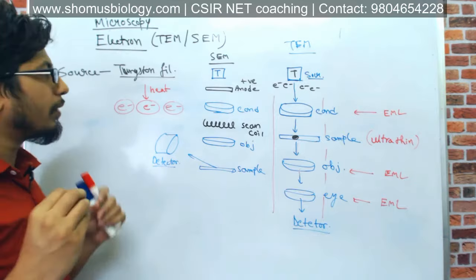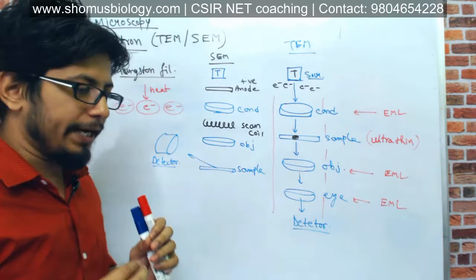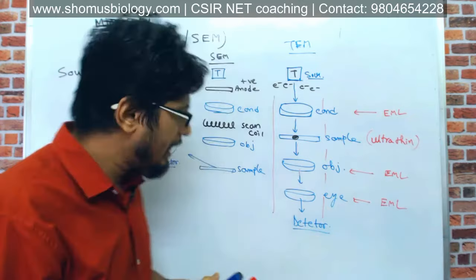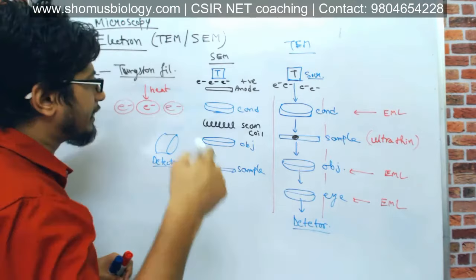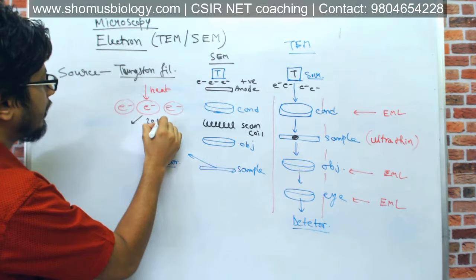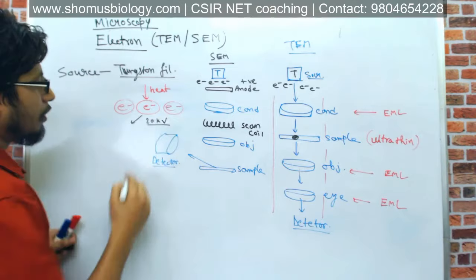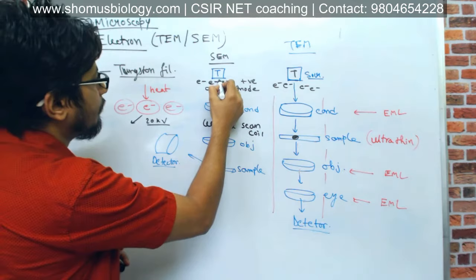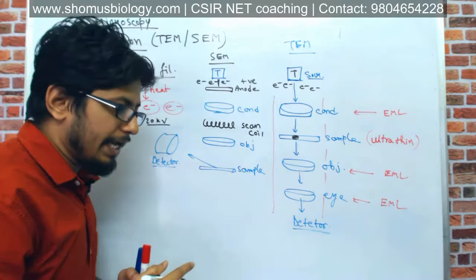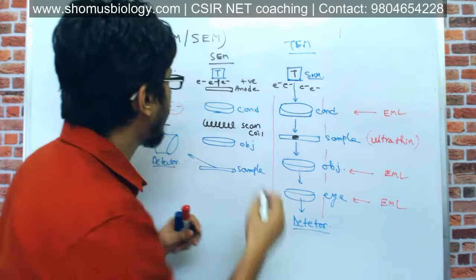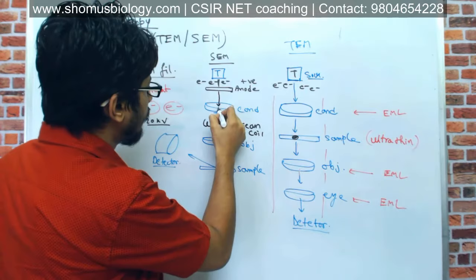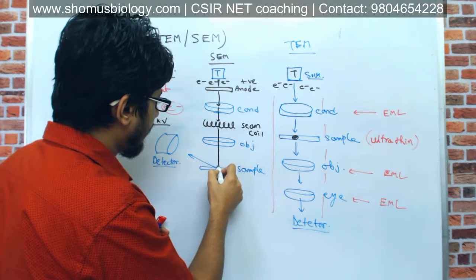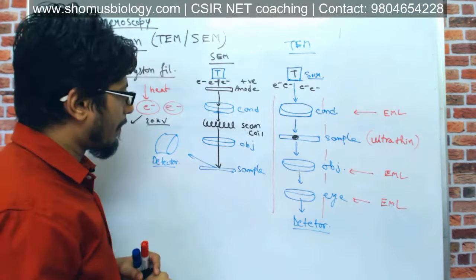Now let's look at the working principle of SEM. Electrons are generated from the heated tungsten filament source. These electrons are negatively charged but not focused, so we apply around 20 kilovolts of energy to form them into a single beam. The positively charged anode helps align the electrons into a single thin electron beam, which then enters the condenser, passes through the scan coil, goes through the objective, and finally hits the sample. A condenser diaphragm may also be present.